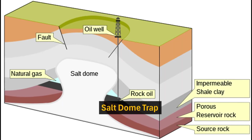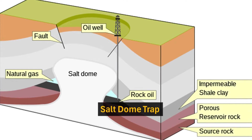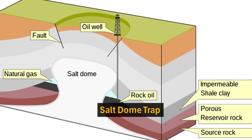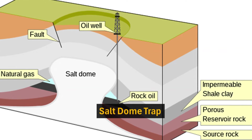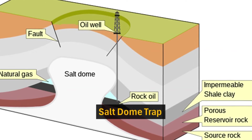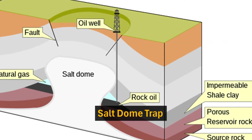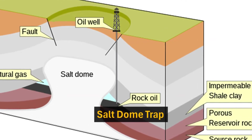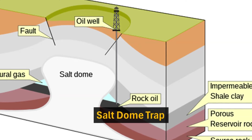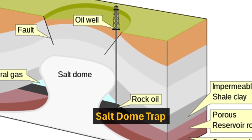Another type of trap is called a salt dome trap. This occurs when a large mass of salt rises through rock layers due to its lower density and plasticity. As it rises, it pushes aside and breaks through many layers of rock. If it encounters a porous and permeable layer containing oil and gas, it can create a trap by sealing it off with its impermeable salt.